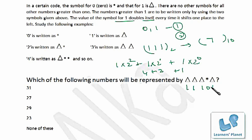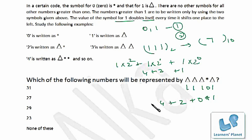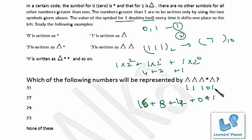First problem: which number is represented by delta-delta-delta-star-delta, which is 11101 in binary? You just convert this to decimal. Starting from right: 1×2⁰ = 1, 0×2¹ = 0, 1×2² = 4, 1×2³ = 8, 1×2⁴ = 16. So 16 + 8 + 4 + 0 + 1 = 29. The answer is 29. The problem becomes very easy once you've cracked the coding.